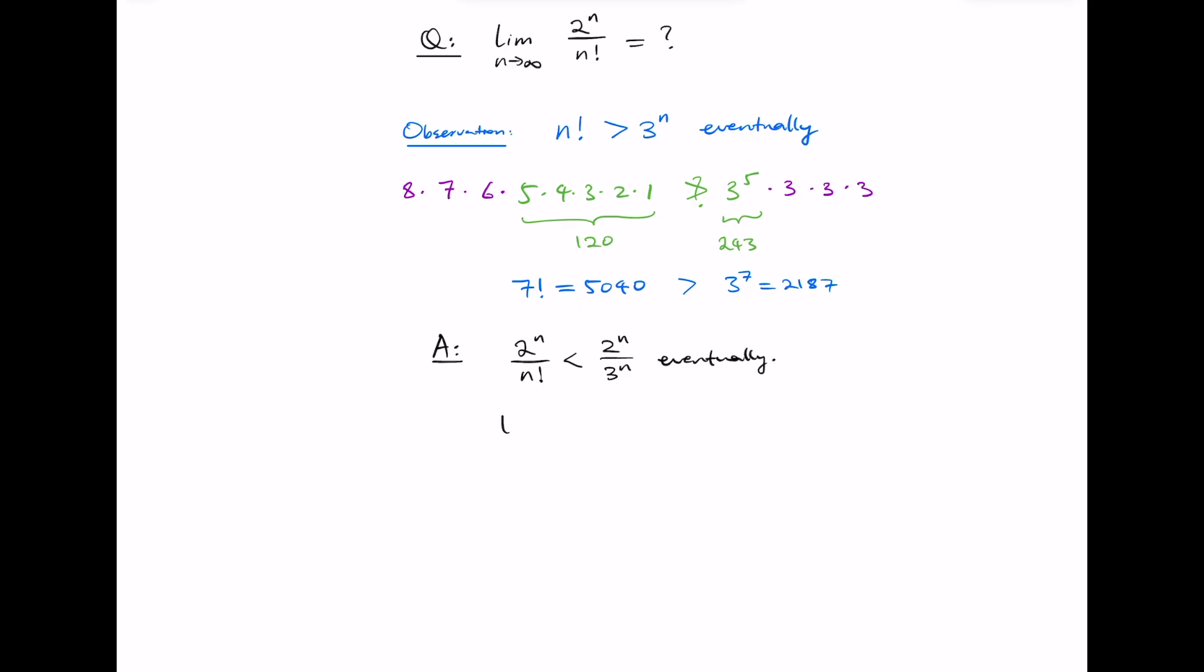But we know that the limit as n goes to infinity of 2 to the power of n divided by 3 to the power of n is the limit of 2 thirds to the n. And this is 0. So it follows that the answer to our original question is 0.